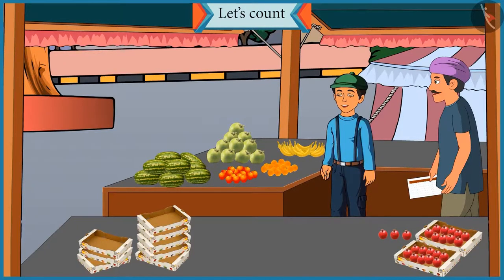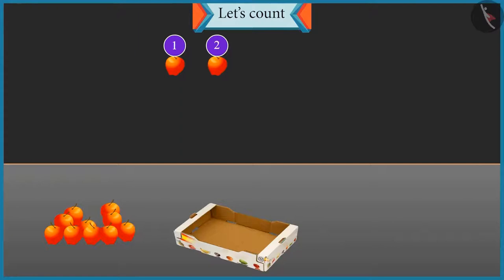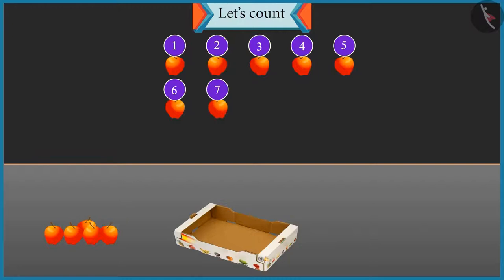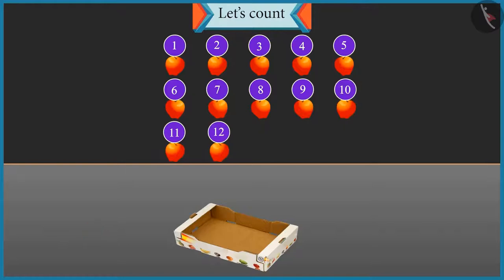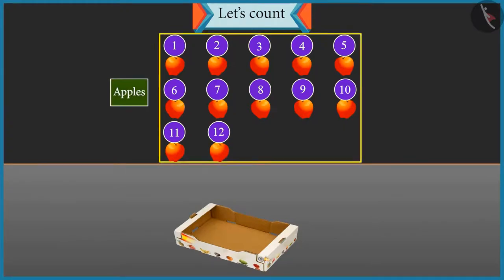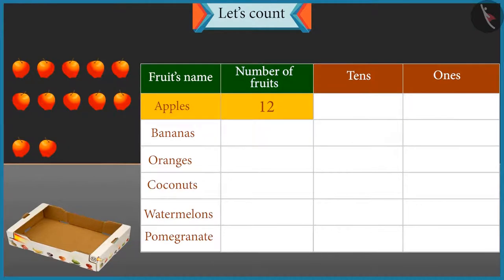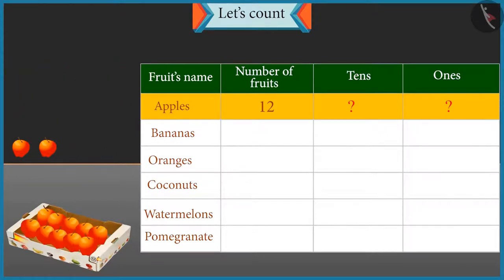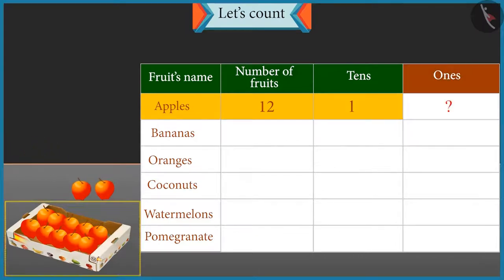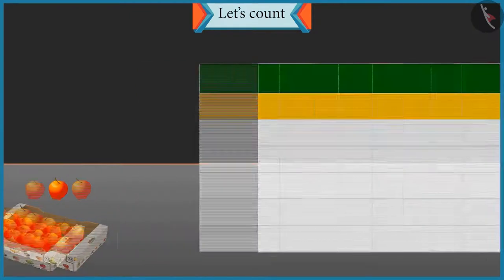Okay, Uncle. One, two, three, four, five, six, seven, eight, nine, ten, eleven and twelve. There are twelve apples. Well done. Apples: twelve. Now tell me, how many tens and ones are there in twelve? One group of ten will be formed and two apples will be left. So there is one tens and two ones. Well done.